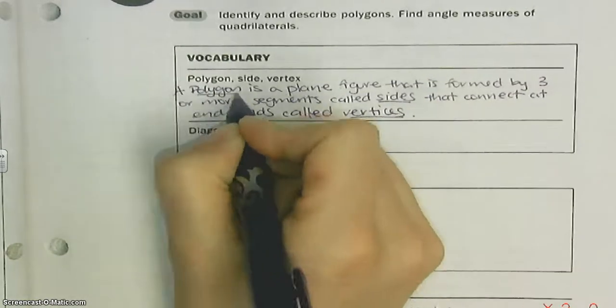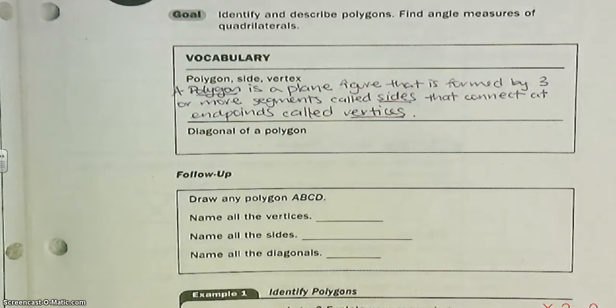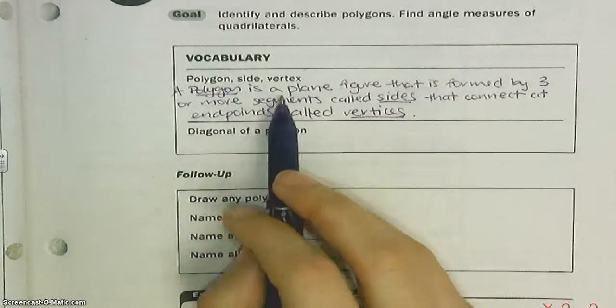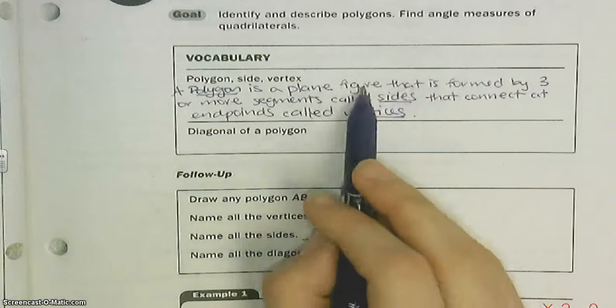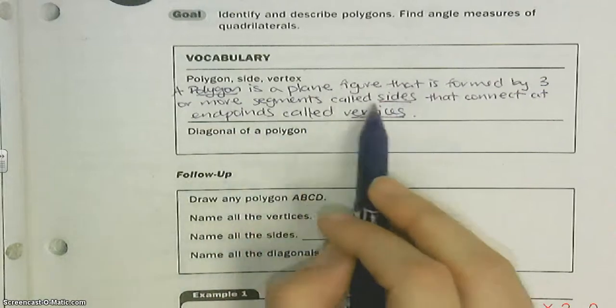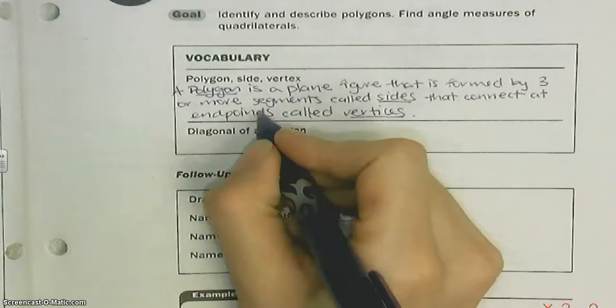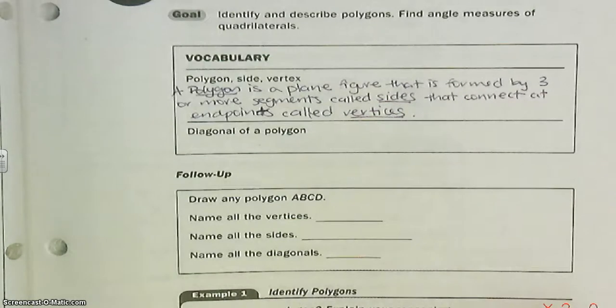So there's our three words: polygons, sides, and vertices. A polygon is a plain figure, a flat figure, that is formed by three or more segments called sides that connect at endpoints called vertices.